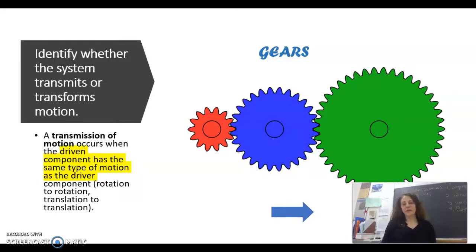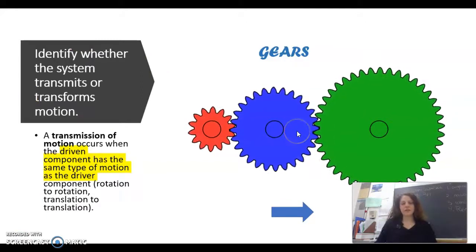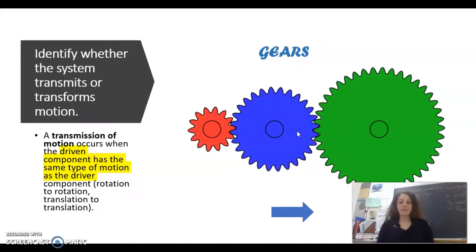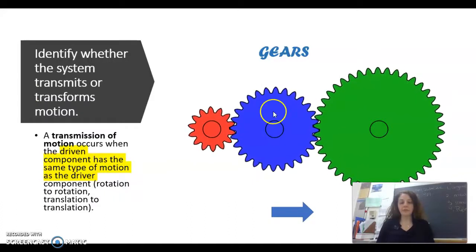Hi, so this is my video on mechanisms. As one of the things you have to identify when you look at mechanisms is transmission of motion. You have to look at whether the components that are in the machine are transmitting the same type of motion or transforming the motion.